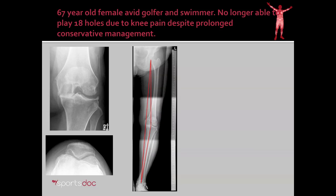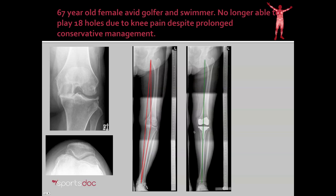So here we have our case example again. Here's our preoperative photos again showing that abnormal mechanical alignment. And here you can see three months after the knee replacement — the bright white here is the metal components of the prosthesis, the clear space is where the plastic is. But most importantly, you can see that the mechanical axis of the knee is restored, again aligned from the center of the femoral head to the center of the ankle, falling in the center of the knee. Thank you.